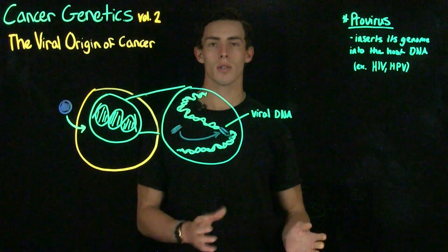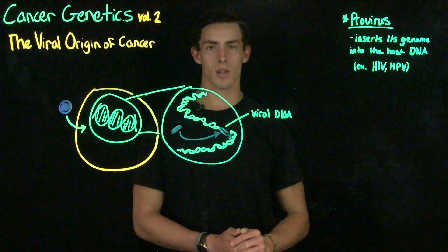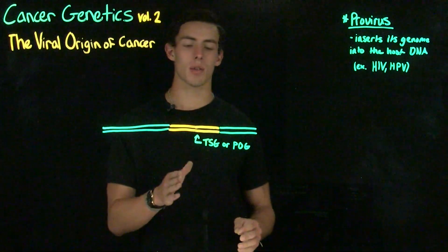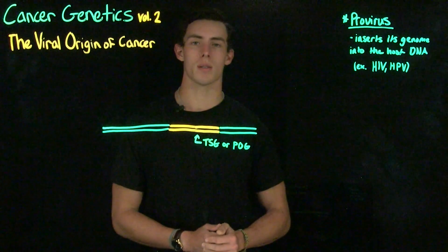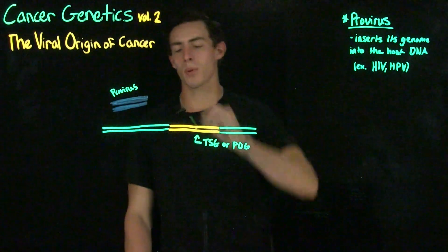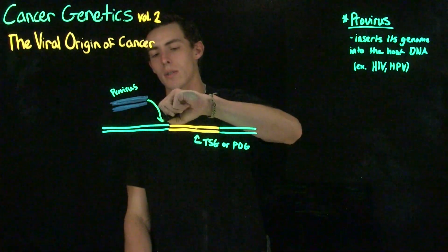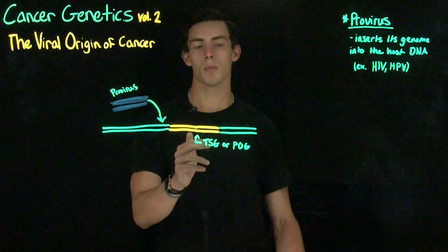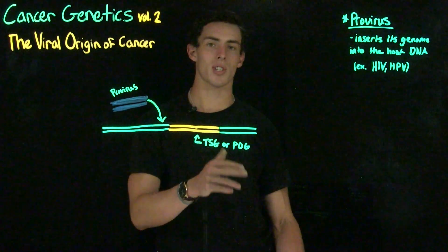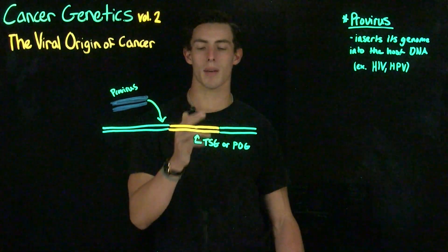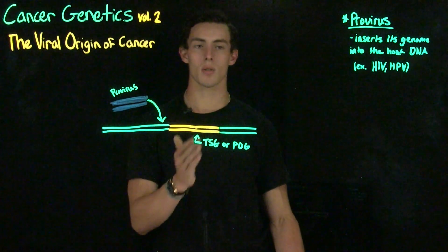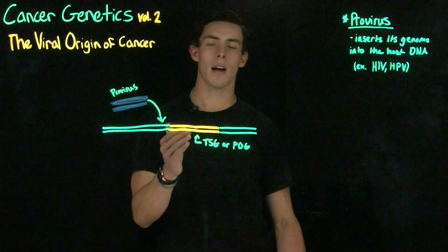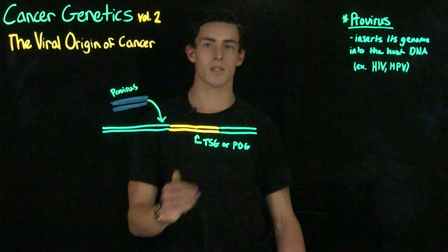Let's take a closer look at this DNA and evaluate how this could cause cancer. Starting with the host chromosome and a gene that can either be a tumor suppressing gene or a proto-oncogene — if this provirus is inserted near one of these potentially cancer-causing genes, this tumor suppressor gene or proto-oncogene can become mutated in a way that will either turn it into a mutant tumor suppressing gene or an oncogene, either way paving the way for the creation of cancer.